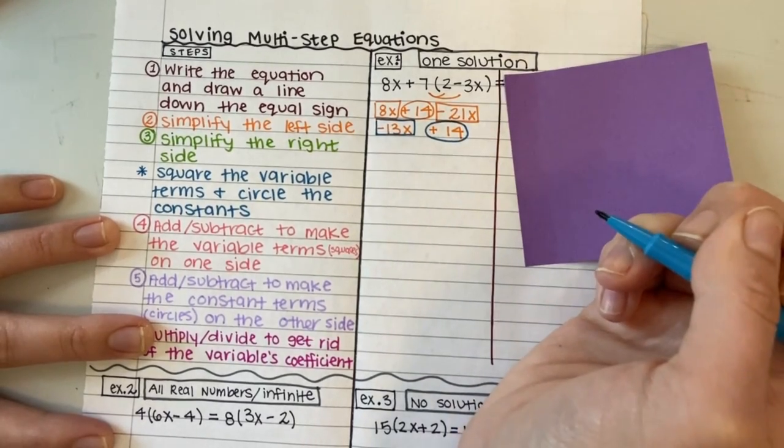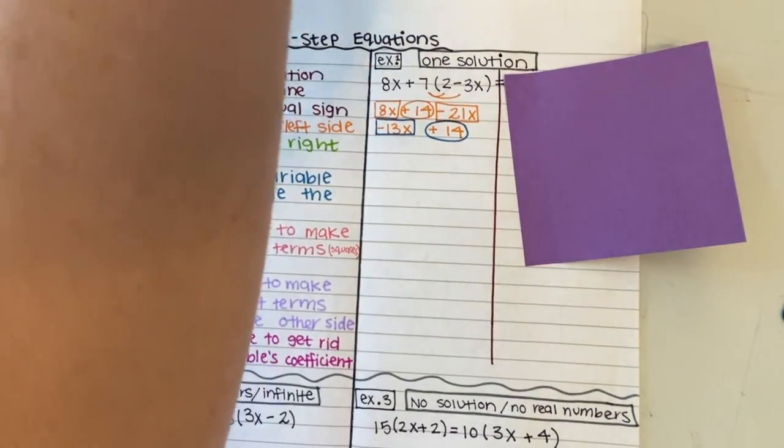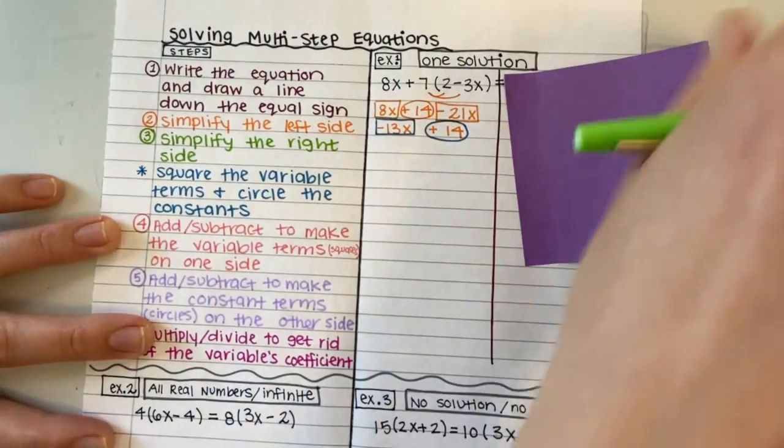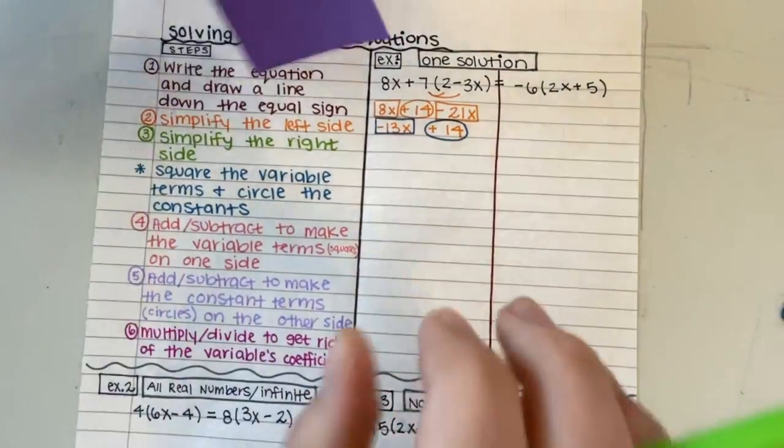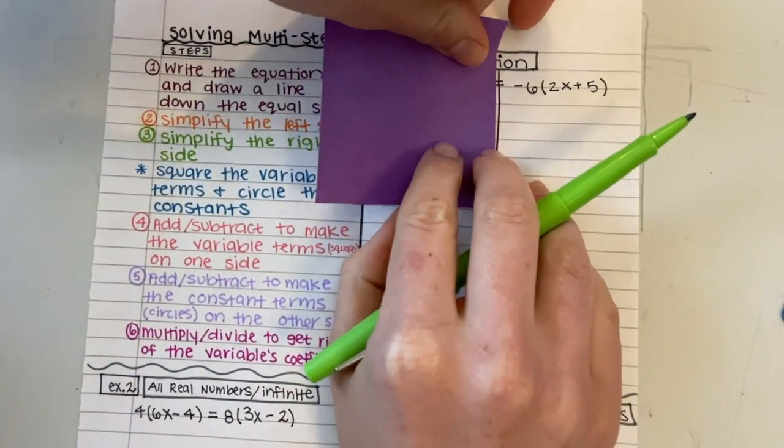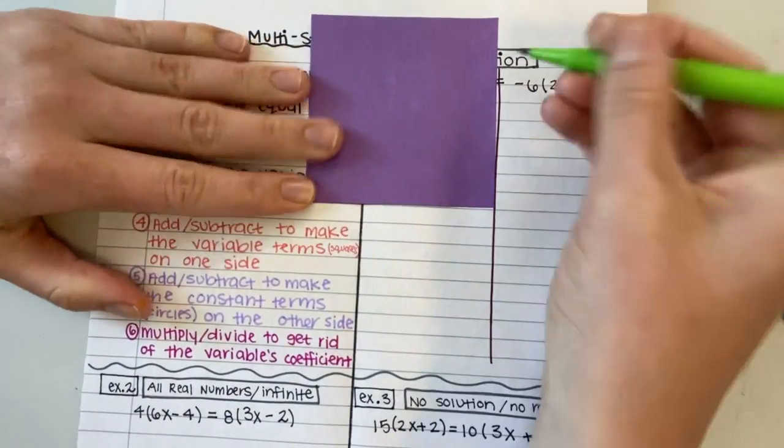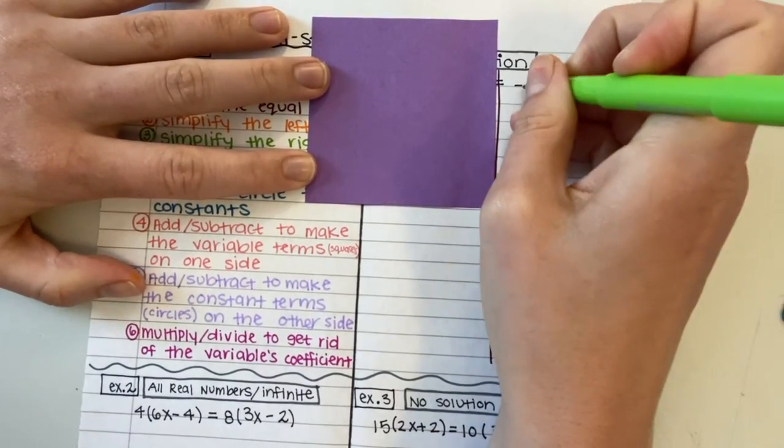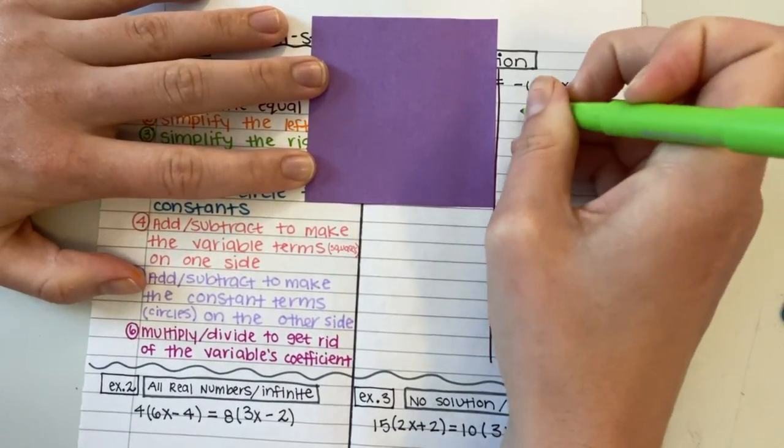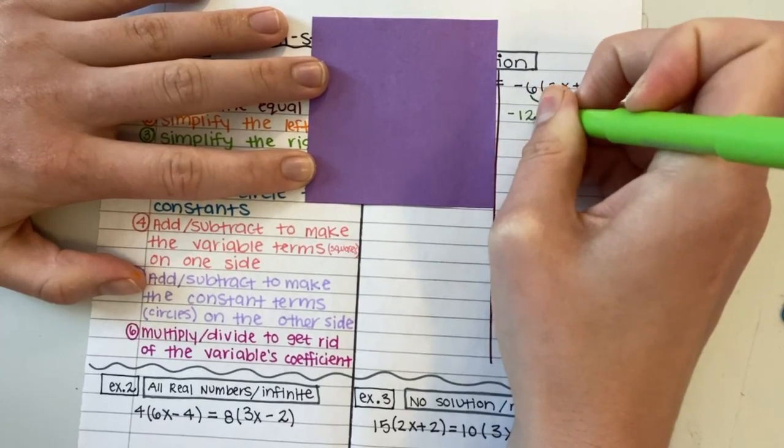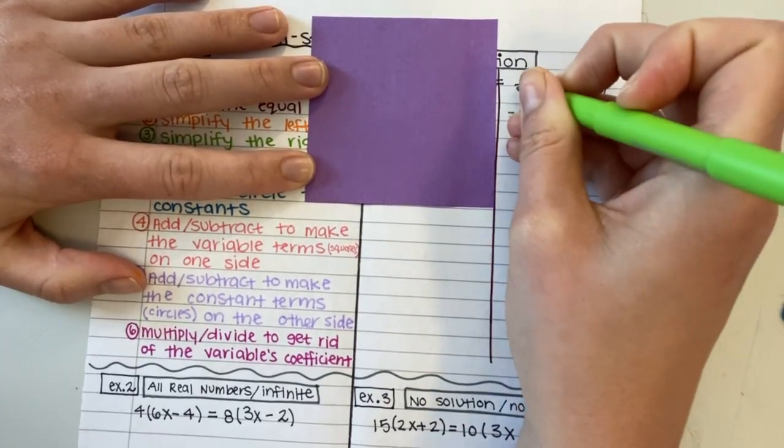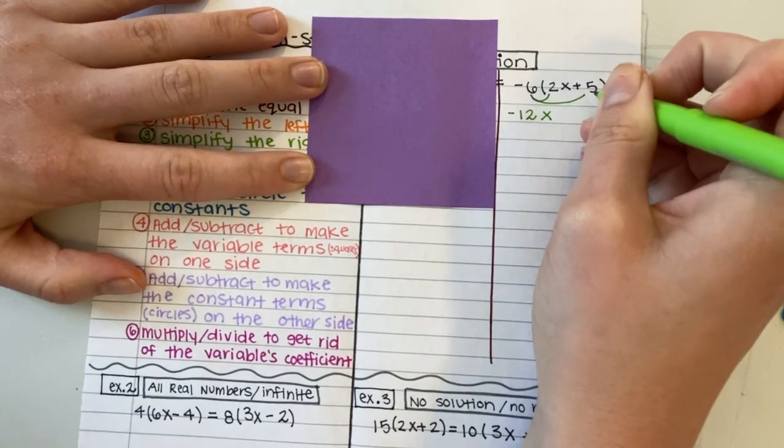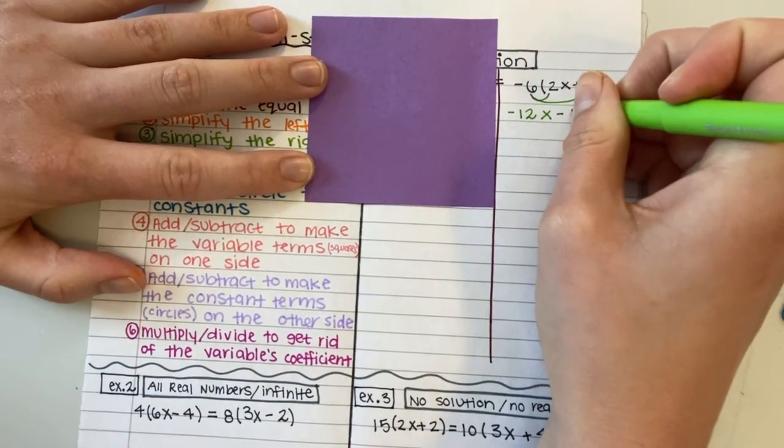My next step is to simplify the right side. So this time I'm going to cover up my left side and focus in only on that right side. So I get to use the distributive property again. Negative 6 times 2x gives me negative 12x. Negative 6 times 5 gives me negative 30.